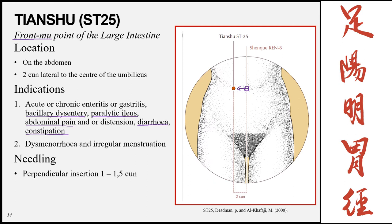Tianshu is also a good example of acupuncture's ability to treat opposing conditions — it can be used for both diarrhea and constipation, which are opposing. Needling is perpendicular, 1 to 1.5 cun.